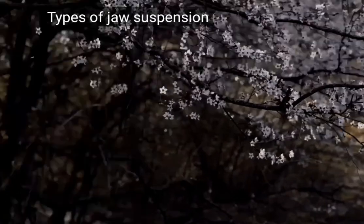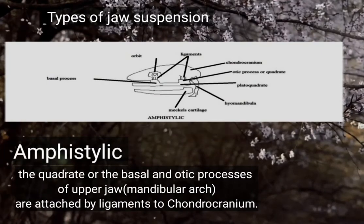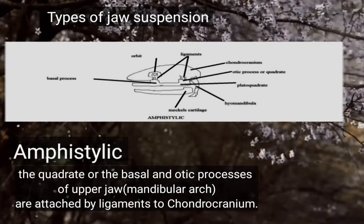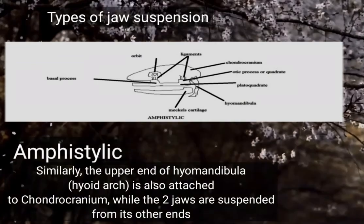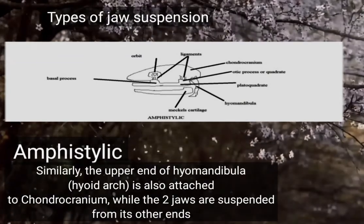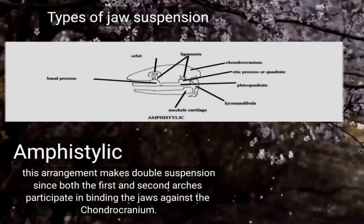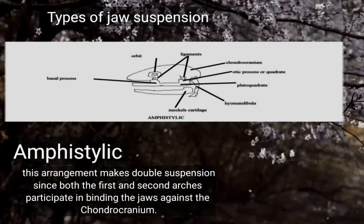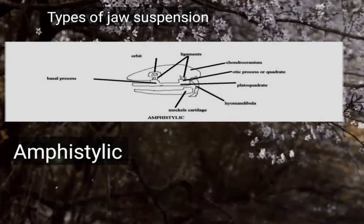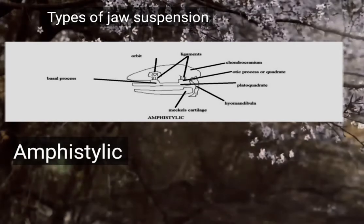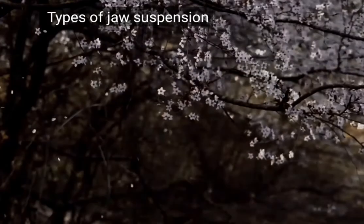The second type of jaw suspension is amphistylic. The quadrate or the basal and otic process of the upper jaw are attached by ligaments to the chondrocranium. Similarly, the upper end of the hyomandibula is also attached to the chondrocranium, while the two jaws are suspended from its other ends. This double suspension occurs because the first and second arches both participate in binding the jaws against the chondrocranium. Amphistylic jaw suspension is found in primitive sharks.